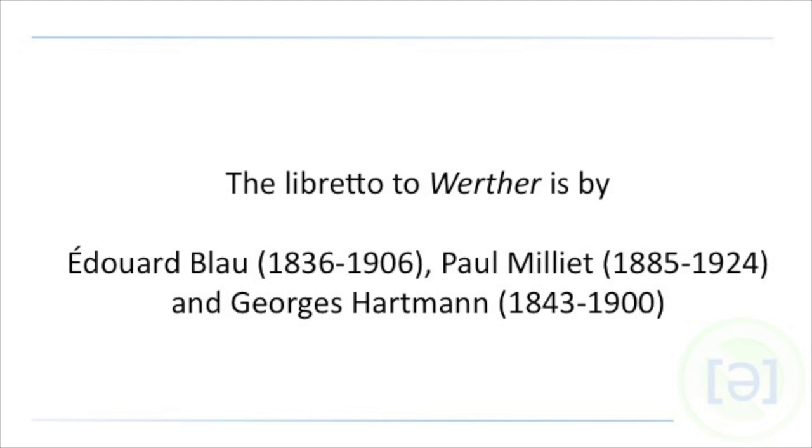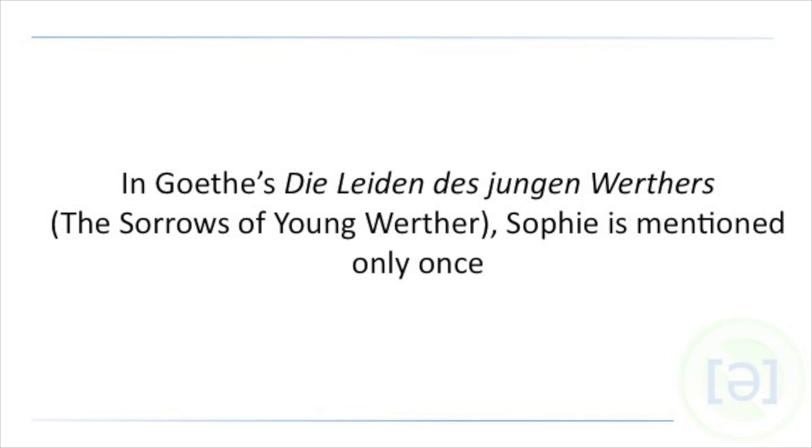Werther was composed by Jules Massenet to a libretto by Édouard Blau, Paul Milliet, and Georges Hartmann. In Goethe's original Die Leiden des jungen Werthers, The Sorrows of Young Werther, Sophie is only mentioned once, simply stating that she's the eldest of all of Charlotte's younger siblings. Her role is fleshed out in the opera as the perfect foil of youthful happiness for all of the sorrow that the rest of the characters must go through. In this aria, she tries to cheer Werther up by mentioning a party that evening, telling him that she expects him to dance with her.